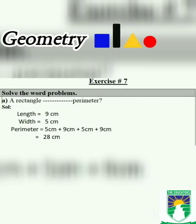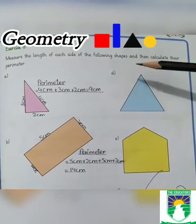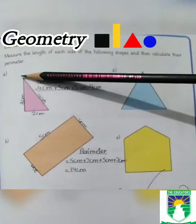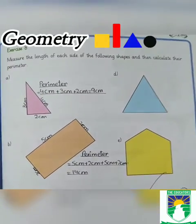Exercise Number 8: Measure the length of each side of the following shapes and then calculate their perimeter. Question number A: Class 3, you can see here is a shape which has three sides.